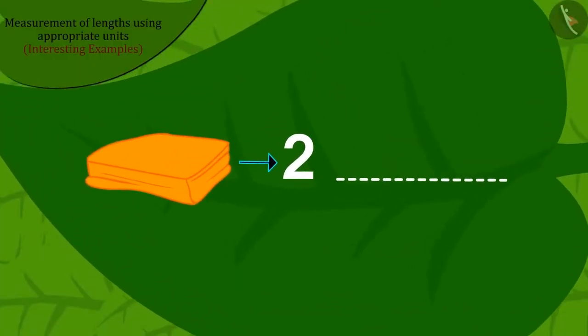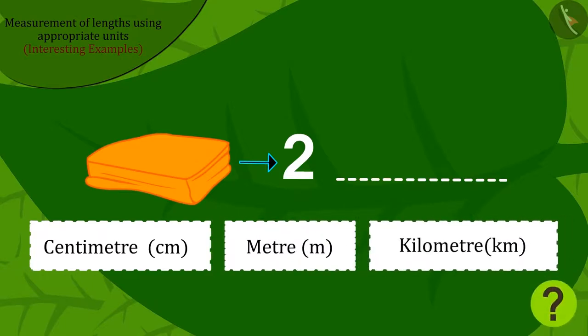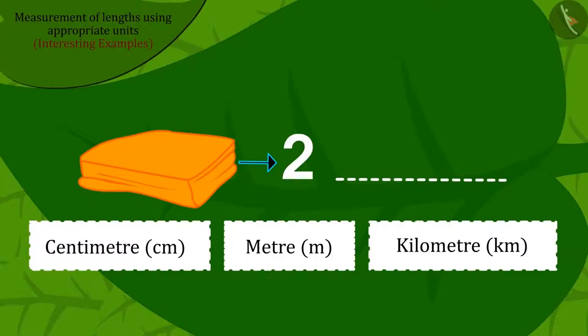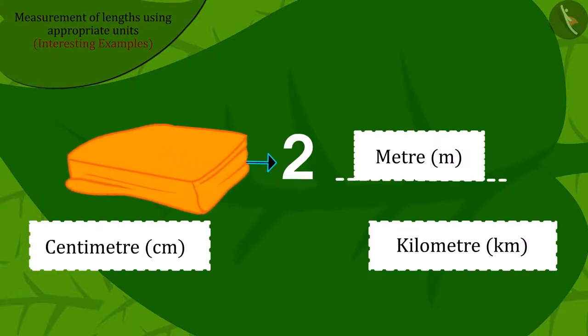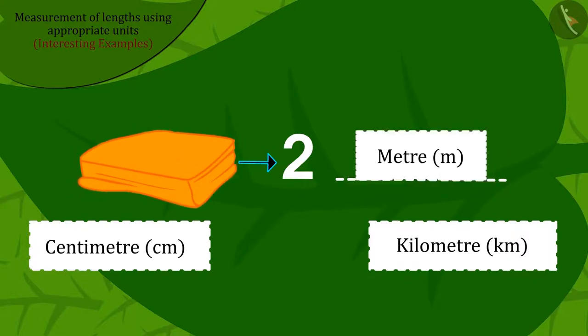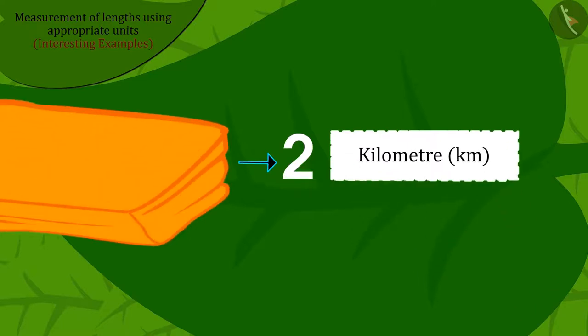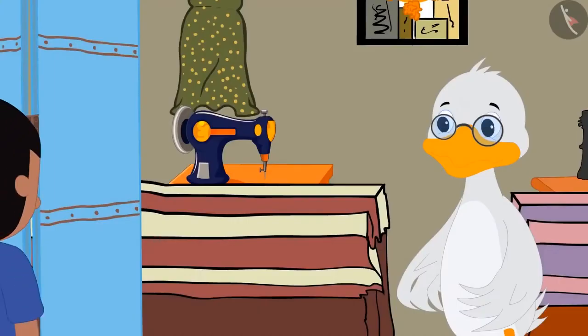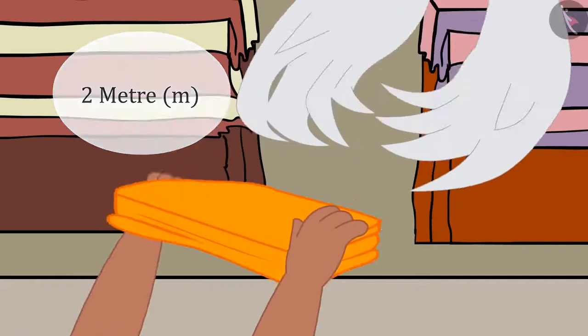Kids, can you tell Raju what units should be used to measure the cloth for his father's shirt? Well done kids, your answer is absolutely correct. Raju should use metre for the piece of cloth for his father's shirt because two centimeters would be too short and two kilometers would be too long. Raju immediately reached the uncle's shop and bought a two metre long cloth for his father.